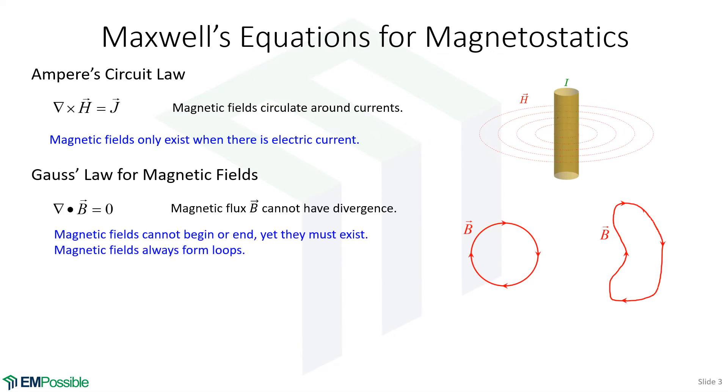Our next equation is Gauss's law for magnetic fields. No change here. So this really hasn't changed from what we've discussed in Maxwell's equations. But it's saying the divergence of the magnetic flux has to equal zero.